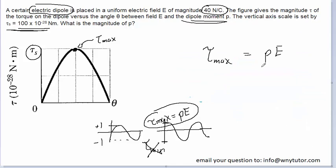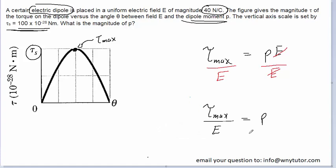Now all we have to do is solve this equation for the magnitude of the electric dipole moment. We simply divide both sides of the equation by E, so that it cancels out on the right-hand side. We will now go ahead and plug in the maximum value of the torque, which as we noted earlier is that tau sub s value, 100 times 10 to the negative 28 newton meters, and then simply divide by the magnitude of the electric field, which is 40 newtons per coulomb.